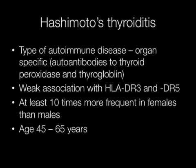Hashimoto's thyroiditis is a type of organ-specific autoimmune disease. There is a weak association with HLA-DR3 and DR5. The condition is at least ten times more frequent in females than males, and the usual age at which it occurs is between 45 and 65.